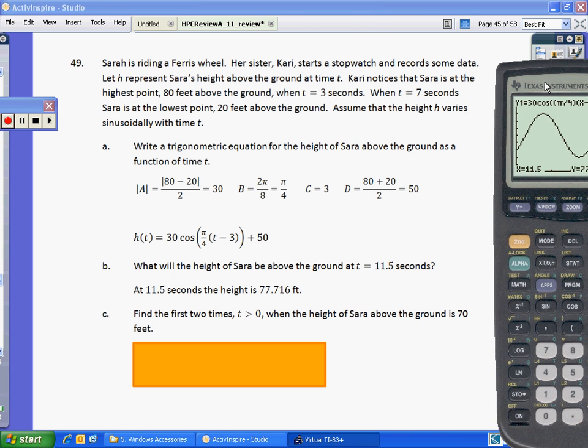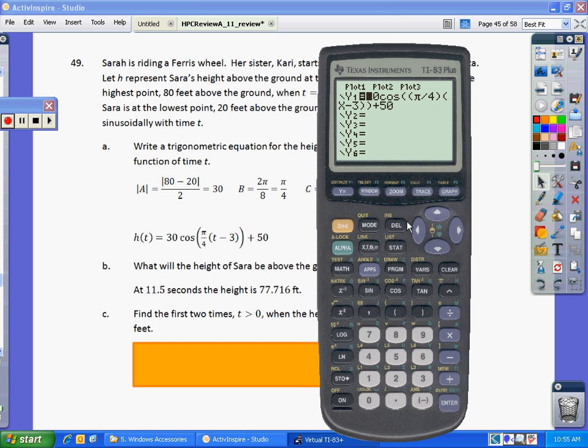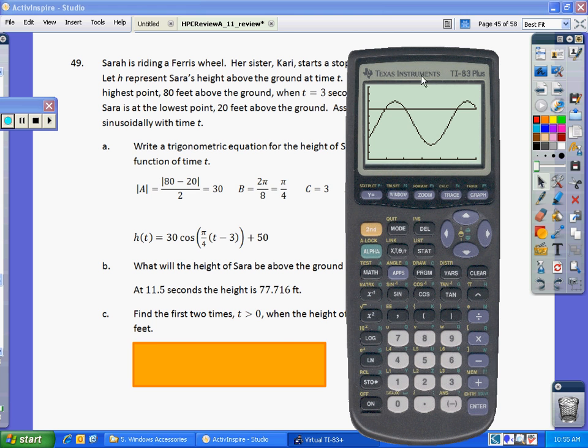Now it says, find the first two times T is greater than 0 when the height of Sarah above the ground is 70 feet. So this is where we go to Y equals, and Y2 plug in 70, graph it. And I want to find the intersection, these first two intersections. Those are the first two times that she is exactly 70 feet above the ground.